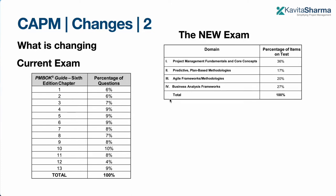In the previous exam, prevalent until December 2022, questions were from PMBOK 6 chapters such as integration management, scope management, and so on. These were process-based questions like 'What is the outcome?' or 'When is the project charter created?' divided by percentage across knowledge areas. The new exam is simplified.